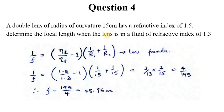We have 1 over F equals in brackets 1.5 for the lens over 1.3 for the environment or fluid, minus 1, close bracket, multiplied by 1 over 15 plus 1 over 15.